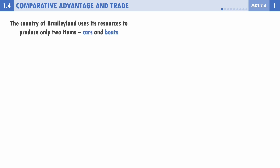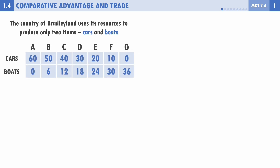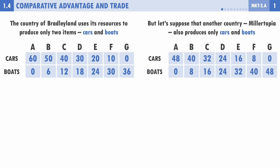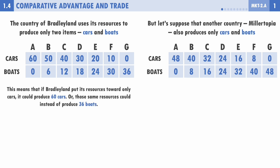Let's look at an example. We're dealing with Bradley Land, which can produce cars and boats, with that same production schedule. We also have the country of Millertopia, which using those same resources has a slightly different ability to produce cars and boats. Bradley Land, if it put all its resources toward cars, could produce 60 cars, or those same resources could produce 36 boats.